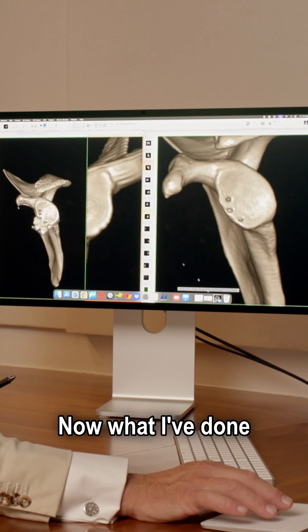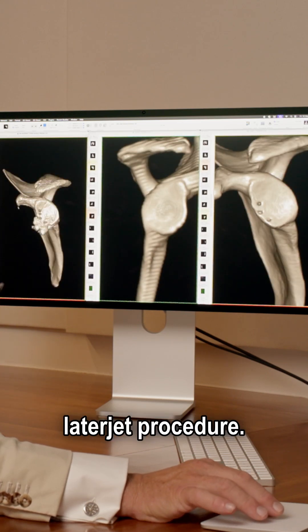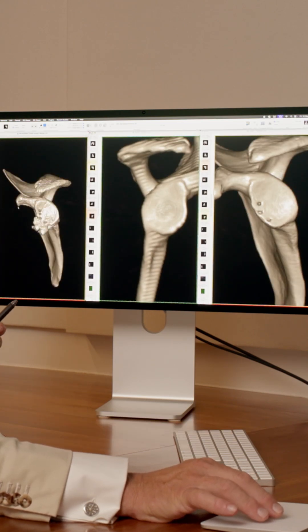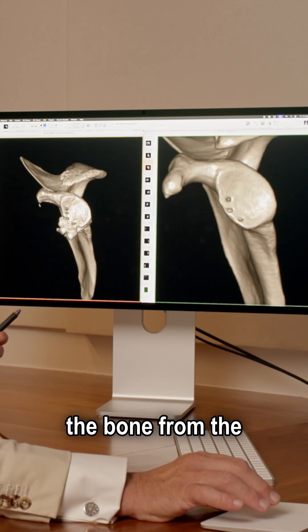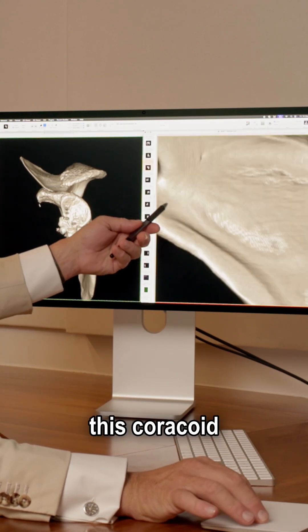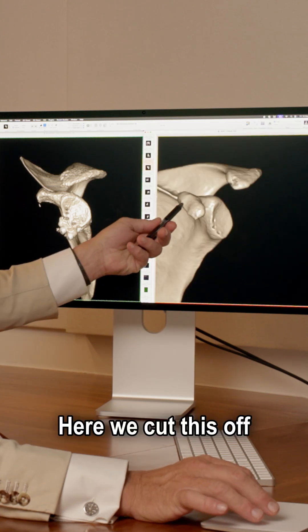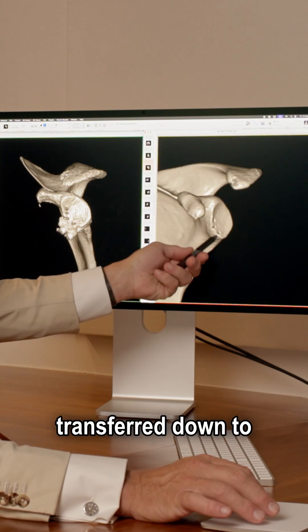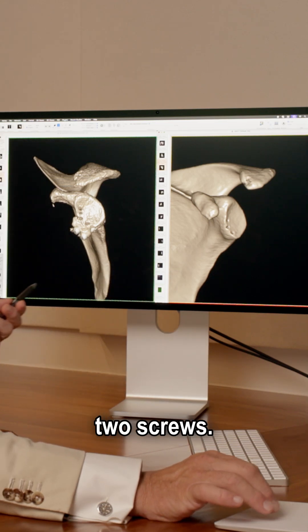Now what I've done for him is a Latarjet procedure, and what that is, is the bone from the front of the shoulder, this coracoid process here. We cut this off at the base and that's transferred down to the front of the shoulder and then fixed with two screws. And you can see that here.